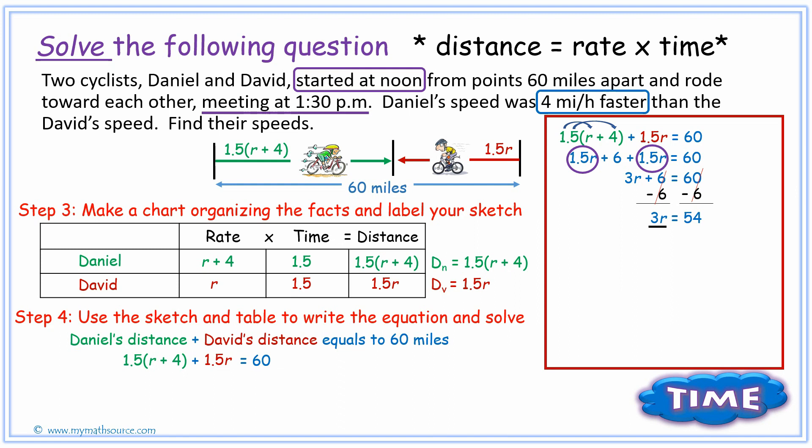To get r by itself, we're going to divide by the same number 3, and what I do to one side of the equation we'll do to the other. The threes will cancel to one, and one r we could just write as r. 54 divided by 3 is 18. Now this is where the consistency lies: we set our r to represent David's rate, so 18 will be the answer for David's rate, and we just need to look at what unit we're using. To find Daniel's speed, you simply have to add 18 to 4, and 18 plus 4 is 22.